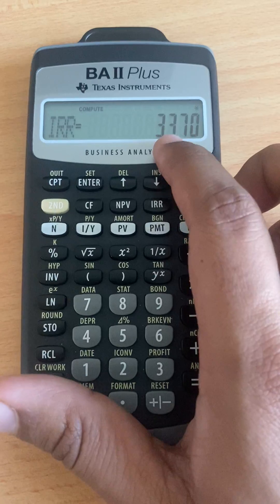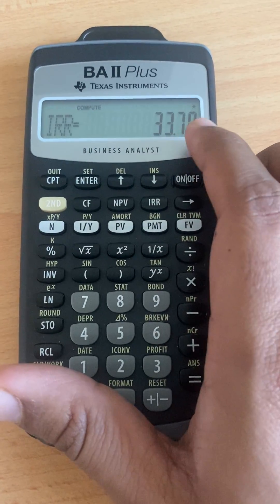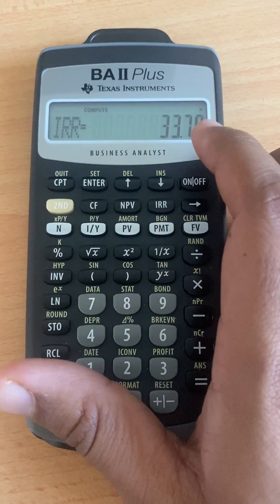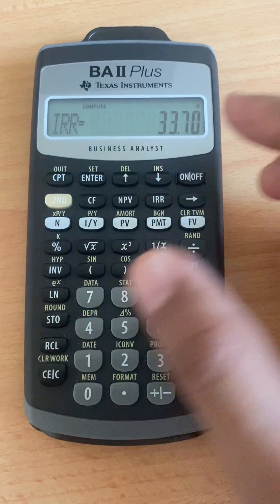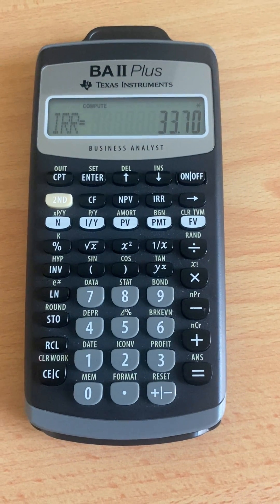And the IRR, you will get 33.7%, alright? That's all for IRR and NPV using the financial calculator. Thank you so much. Assalamualaikum.